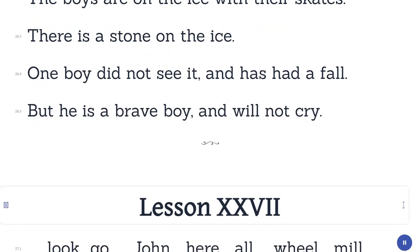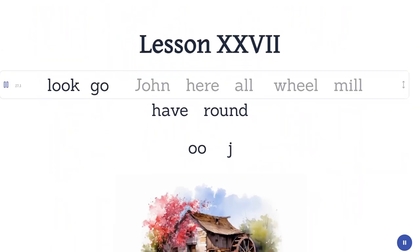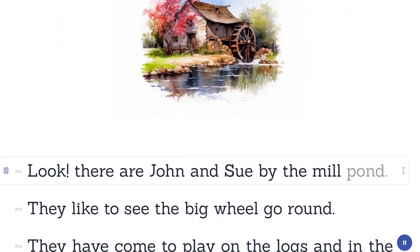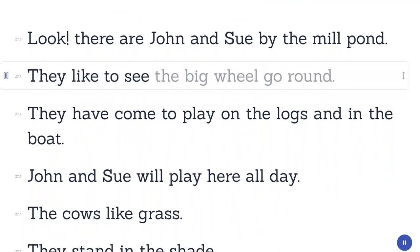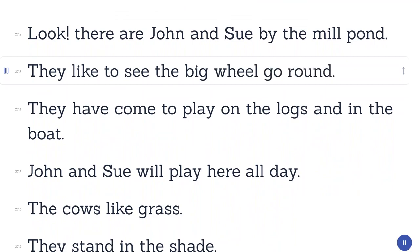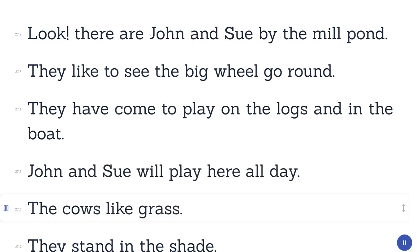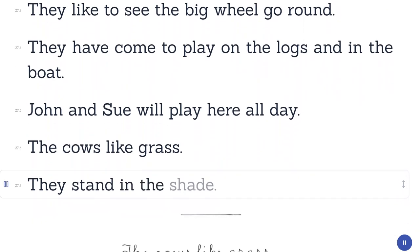Lesson 27. Look. Go. John. Hear. All. Will. Mill. Have. Round. Look, there are John and Sue by the mill pond. They like to see the big wheel go round. They have come to play on the logs and in the boat. John and Sue will play here all day. The cows like grass. They stand in the shade.